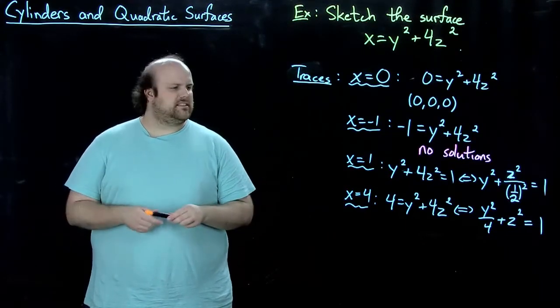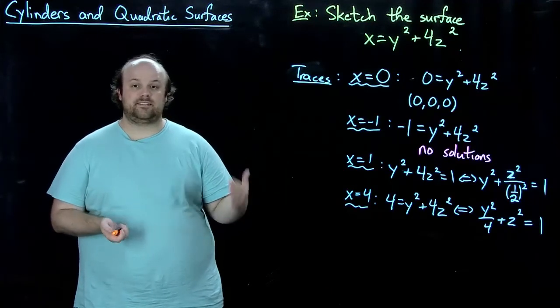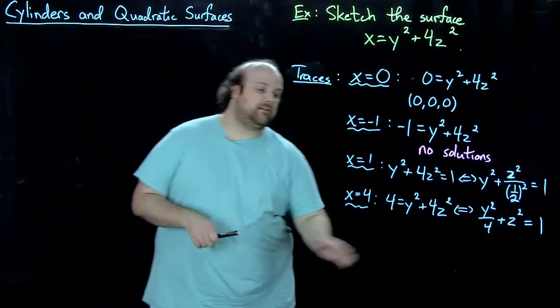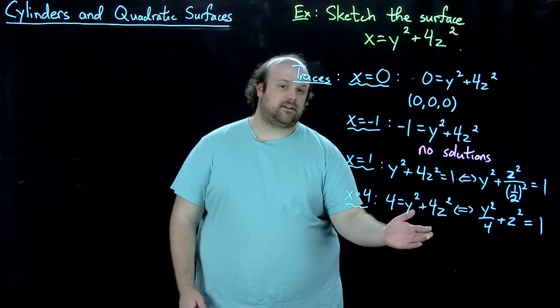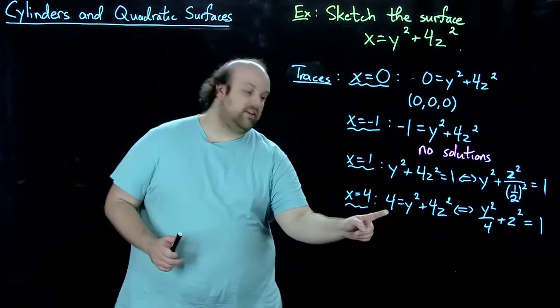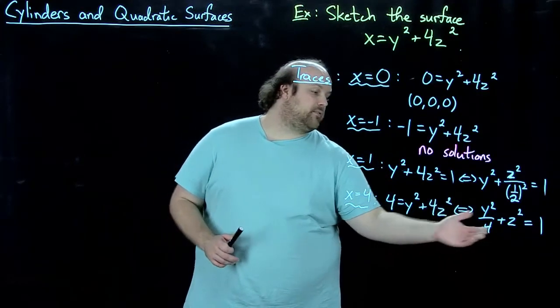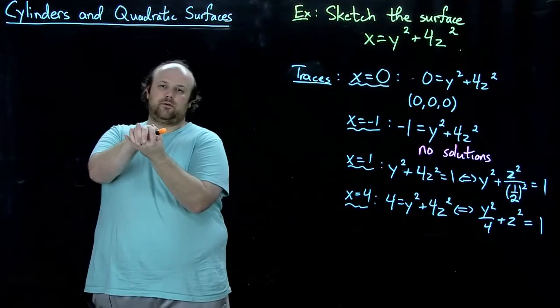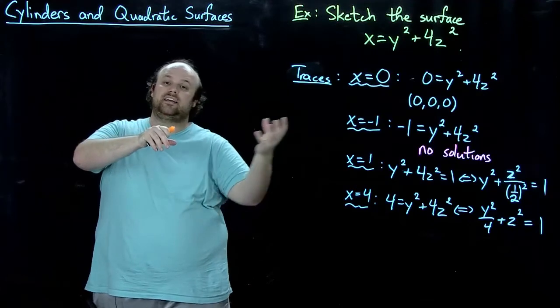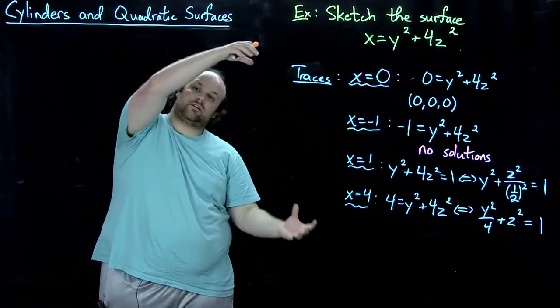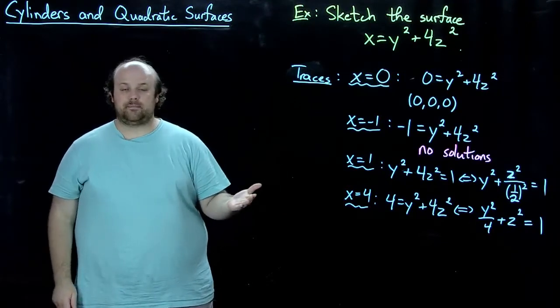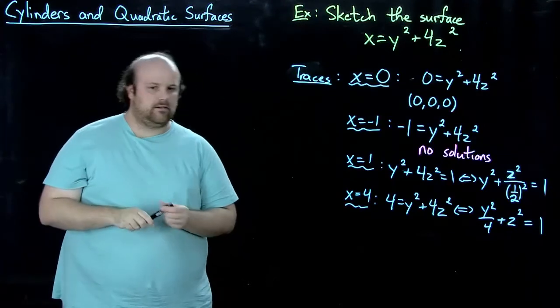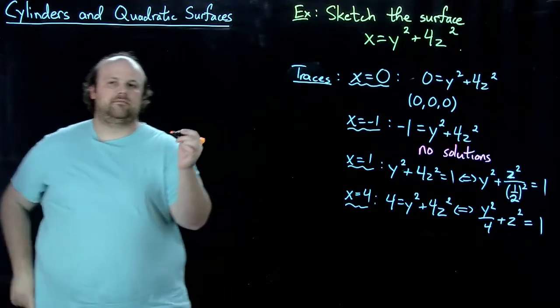And, finally, let's take another trace in the x direction, and let's make x even bigger. Let's say we make it four. Well, then we get four equals y squared plus four z squared, divide by four to get a one over here, a one over here, and we get y squared over four plus z squared equals one. So, what we see is that we start with a point when x is zero, and then as x gets larger and larger, it's a growing ellipse. So the ellipse just keeps getting bigger and bigger.